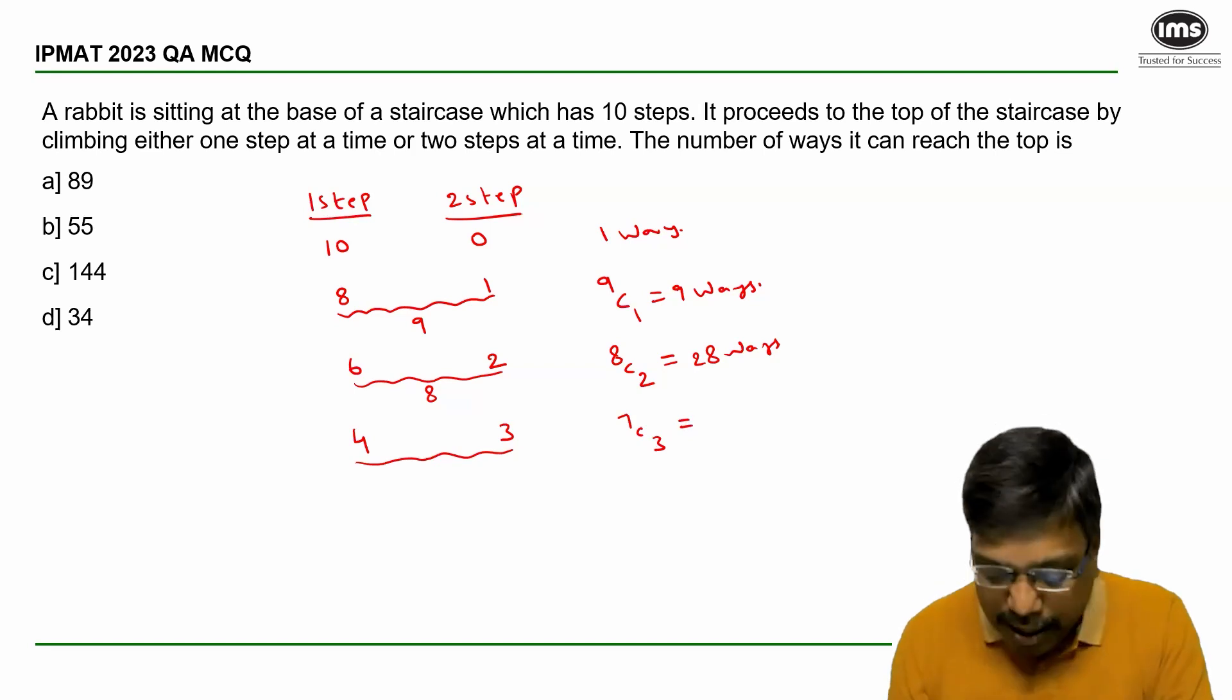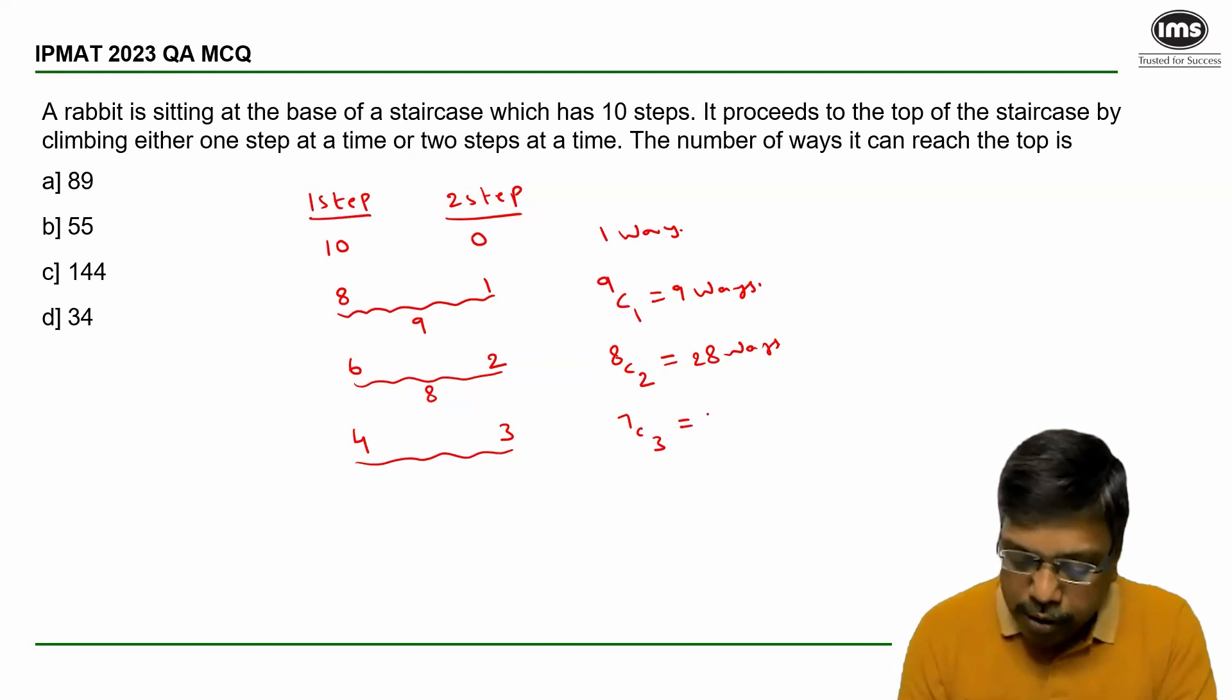which are double steps is 7C3. So 7 times 6 times 5 divided by 3 times 2 times 1, which is 35 ways.